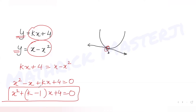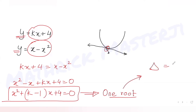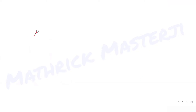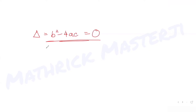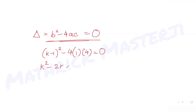Since the line and parabola intersect at only one point, the quadratic has only one root. This means the discriminant must equal zero. The discriminant is b squared minus 4ac, so we get (k minus 1) squared minus 4 times 1 times 4 equals zero.